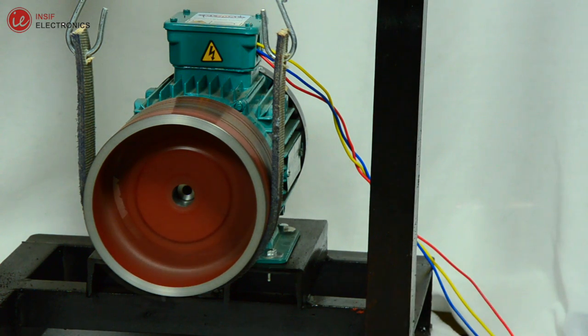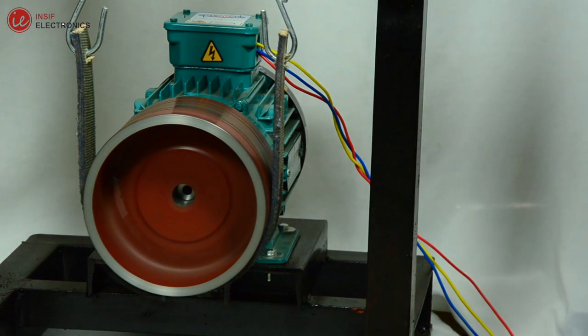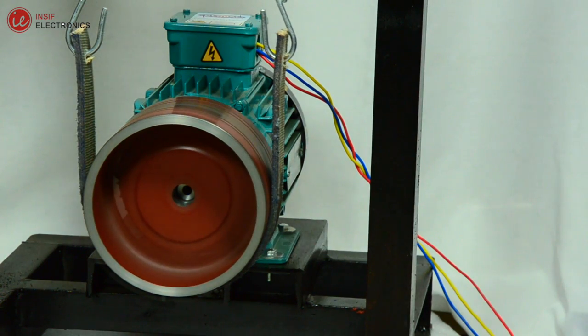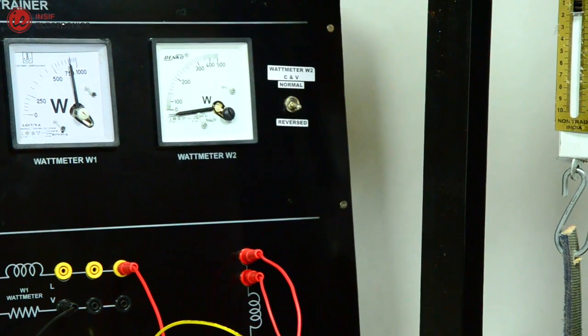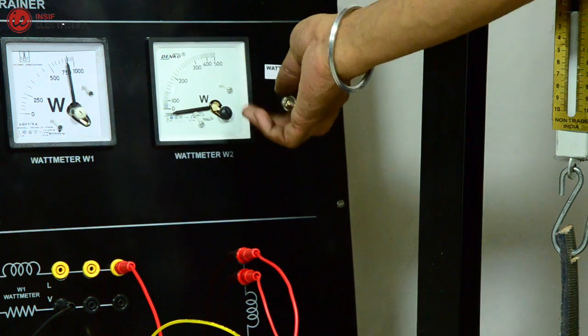As you can see, as the load is increased the speed goes down and the current increases. See the effect on different loads and make sure the current should not increase to the rated value that is 2 amperes.